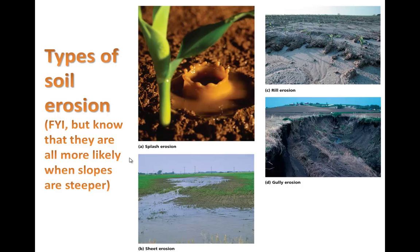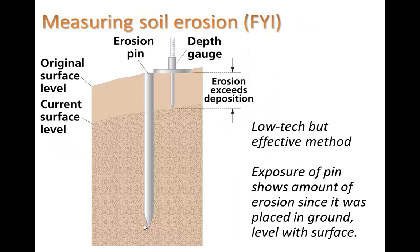Here are some types of soil erosion. There are different kinds: splash erosion, where rain causes soil to go away; rill erosion; gully erosion; and sheet erosion. What you should know about all of these is that they're more likely to happen when slopes are steeper, because gravity can more easily help remove the soil. Soil erosion is also measured using an erosion pin — you stick it in until the top is flush with the soil level, then come back later to see how much is exposed. A depth gauge helps you measure how much soil has been lost.